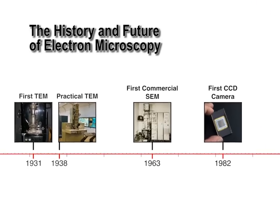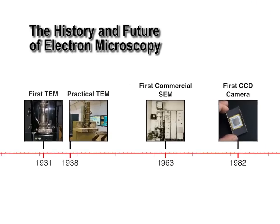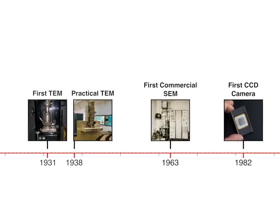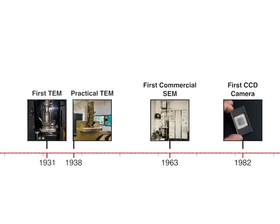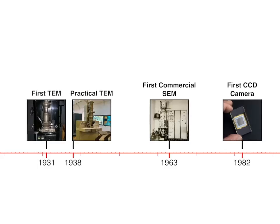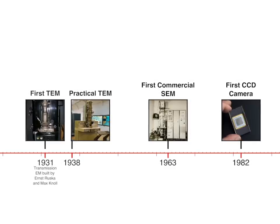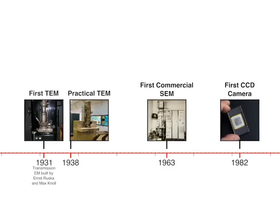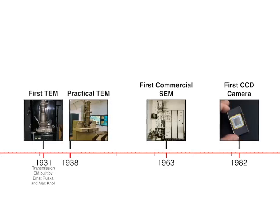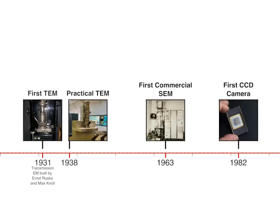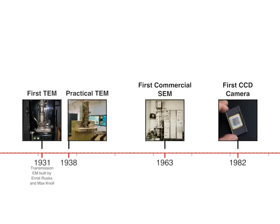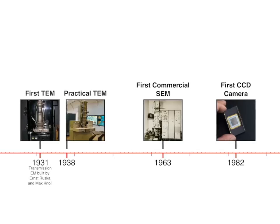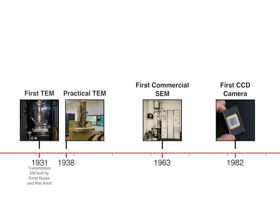In this video, I'll talk a bit about the history and future of electron microscopy. The electron microscope was invented by Hungarian physicist Leó Szilárd, but it was German physician Ernst Ruska and electrical engineer Max Knoll who built the first transmission electron microscope in 1931.